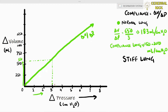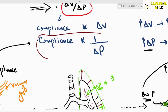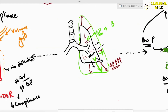Let us say the lung is now fibrosed — it is stiff in nature and will not expand. In order to expand it to the same volume as a healthy lung, more change in pressure is required, and wherever there is more pressure change, compliance reduces.